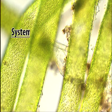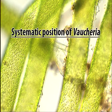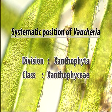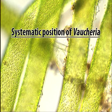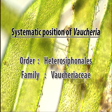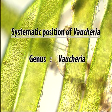Thus, according to the latest view, the systematic position of Vaucheria is as follows: Division Xanthophyta, Class Xanthophyceae, Order Heterosiphonales, Family Vaucheriaceae, Genus Vaucheria.